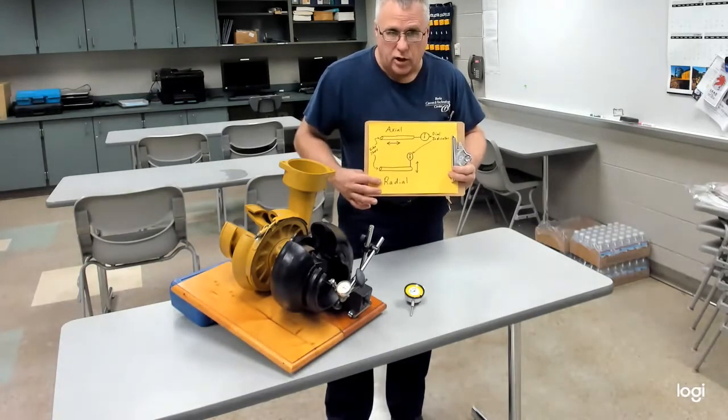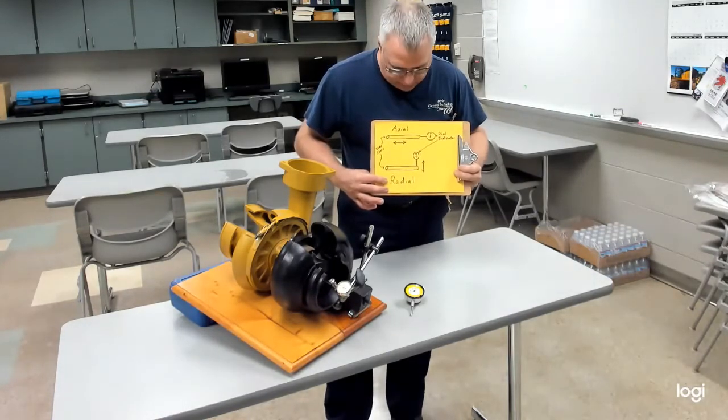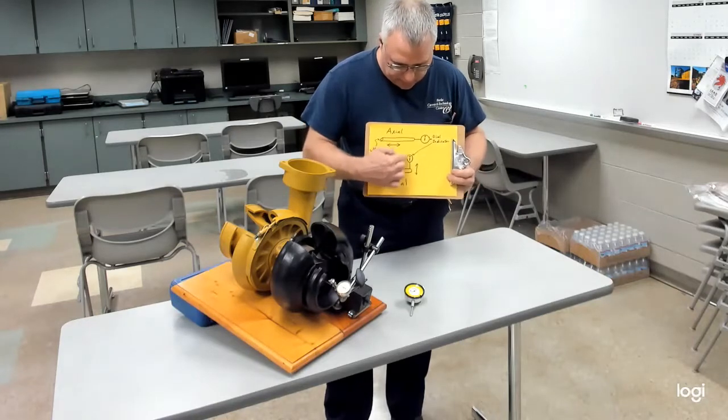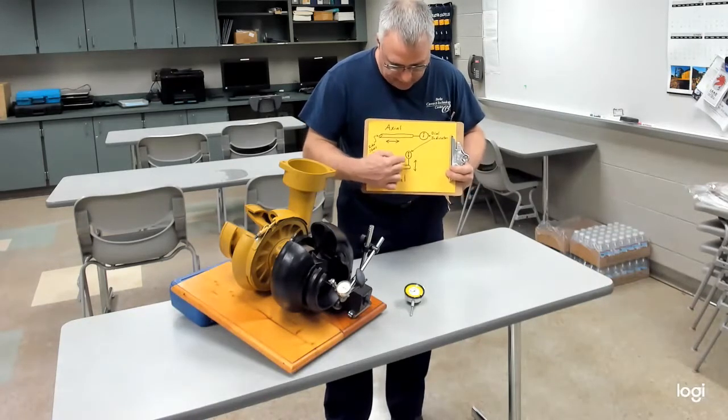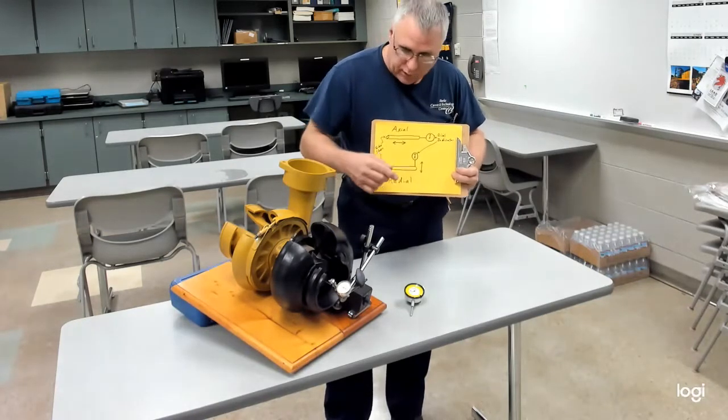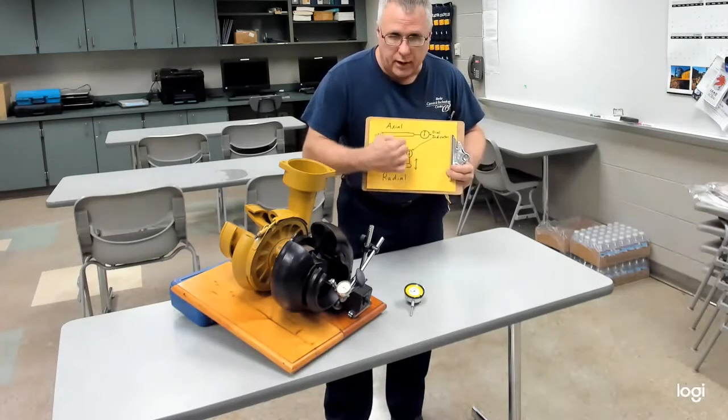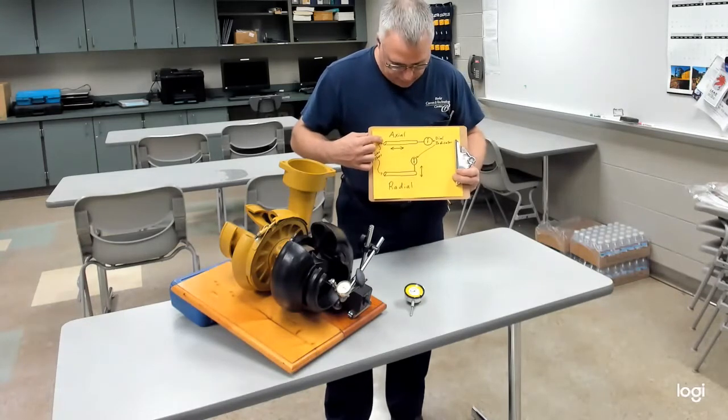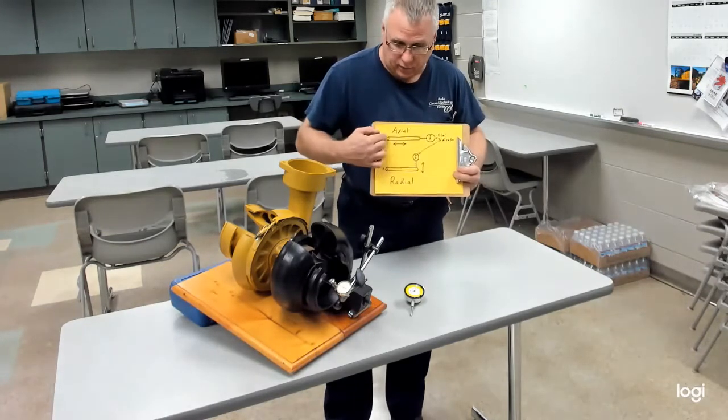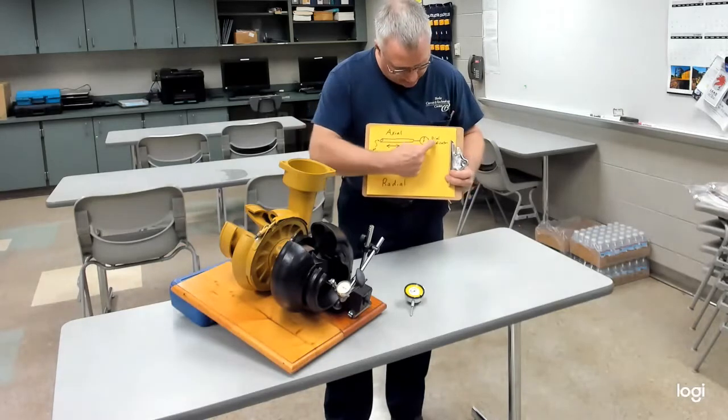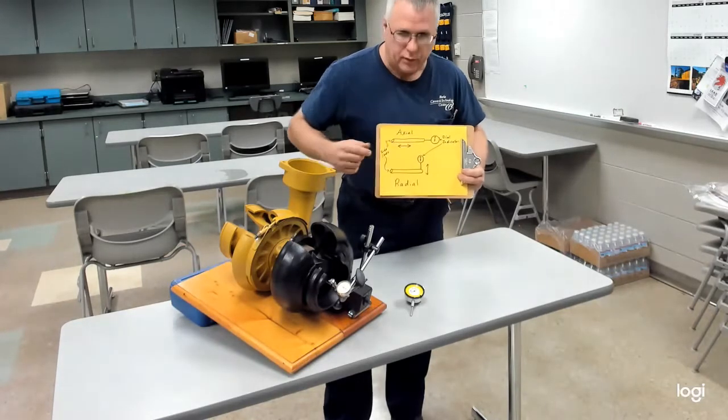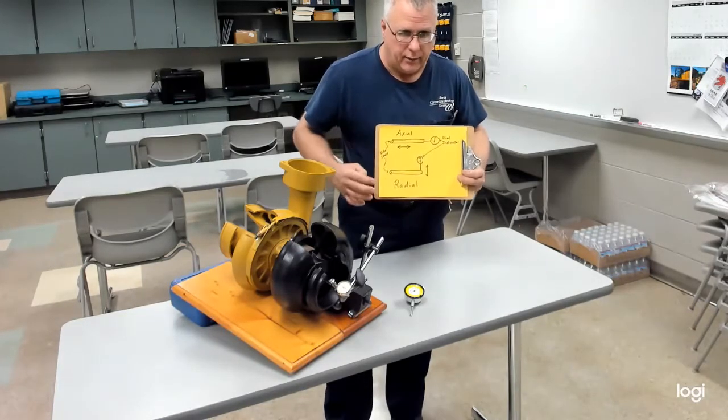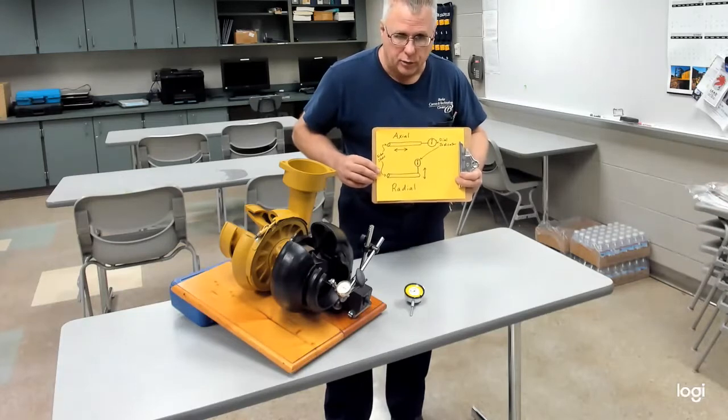The up and down movement is known as radial movement. As seen here on the paper, the tip of the dial indicator is against the shaft, or we'll show you an adapter we use, but we're still measuring that movement up and down. The axial movement is in and out. We'll place the dial indicator usually straight in line like in the picture here, move the shaft in and out, and measure in thousandths of an inch how much movement we have in each.